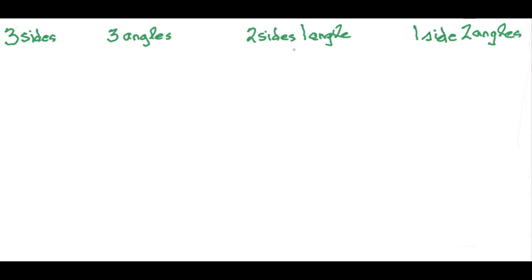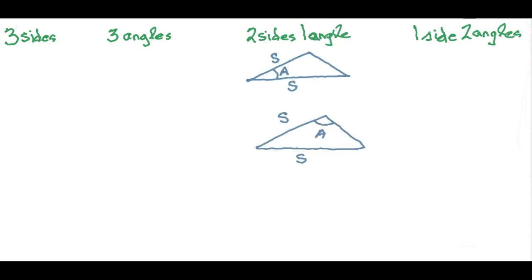The other two possibilities are that we could be given two sides and one angle, or we could be given one side and two angles. In the case that we're given two sides and one angle, either the angle is included between the two sides — we call that a side-angle-side situation — or it is not, in which case we call it a side-side-angle situation. You can see why you generally wouldn't call it an angle-side-side situation.